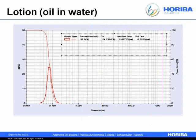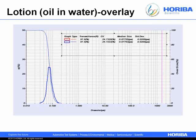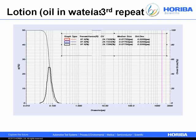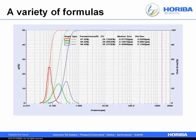For an oil-and-water lotion emulsion, the differential size distribution shows sizes well below 100 nanometers — around 80 nanometers. Three repeats give an almost exact overlay of the curves; the median size changes only in the fourth decimal place. We can also compare a variety of lotion formulas, plotting diameter on the x-axis with the differential distribution on the left and cumulative distribution on the right.